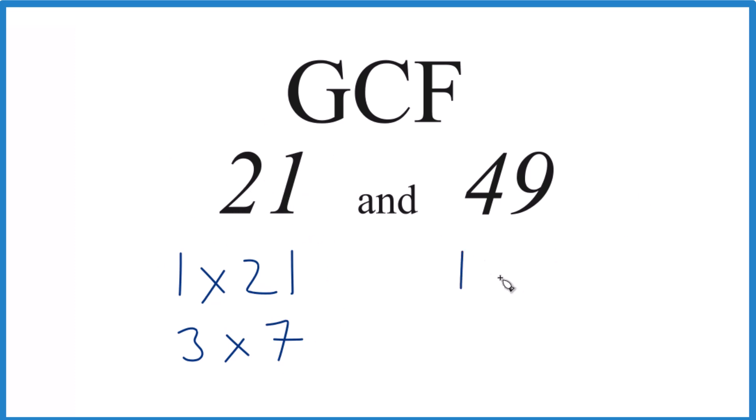For 49, we'd have 1 times 49 and then 7 times 7. I don't think there are any other factors that go into 49 evenly. So these are the factors for 21 and 49. We want to find the greatest common factor.